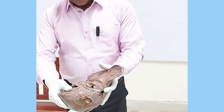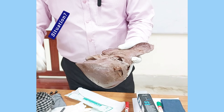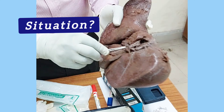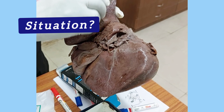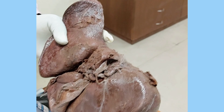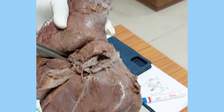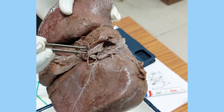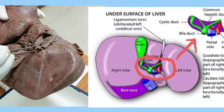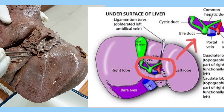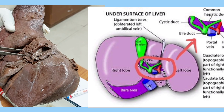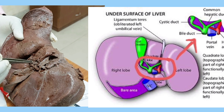Where is it situated? It is situated on the inferior surface of the liver. This entire surface here is the inferior surface. The Porta Hepatis is horizontally placed on this inferior surface, with a length of about 2 to 3 centimeters.